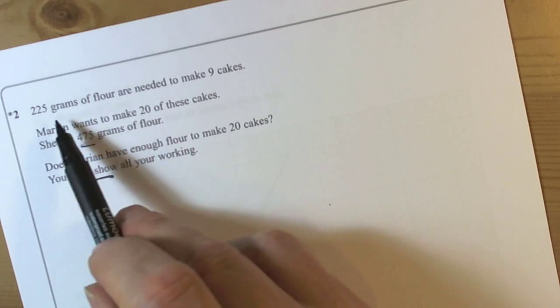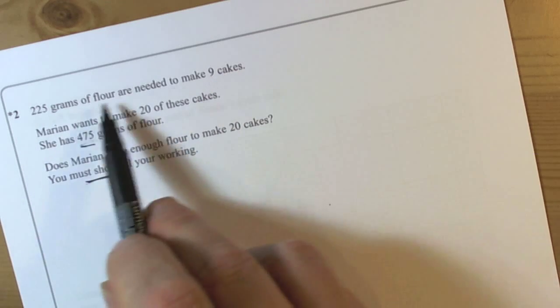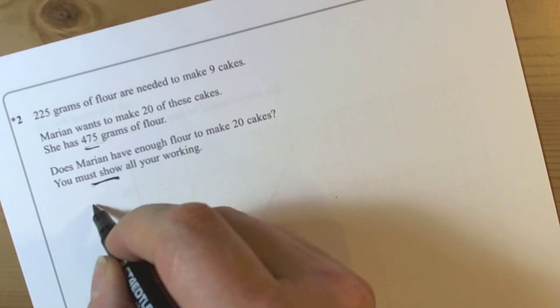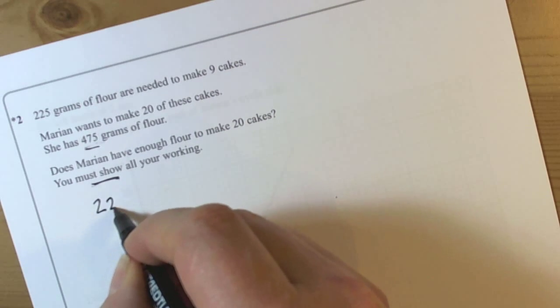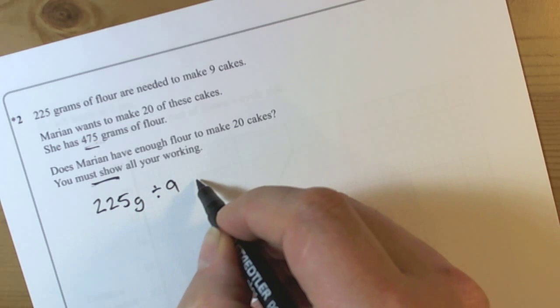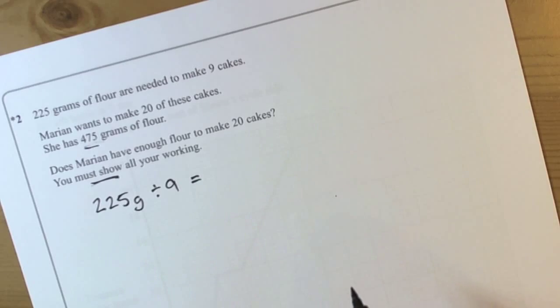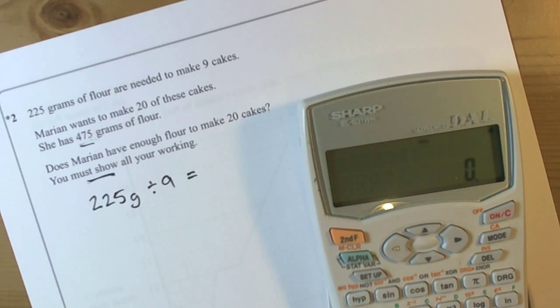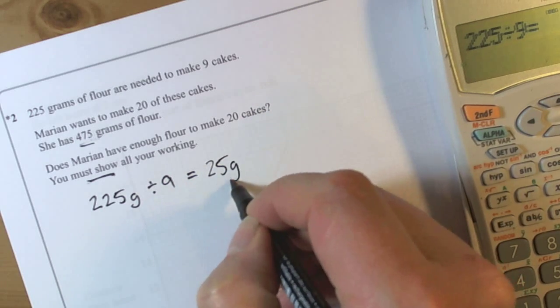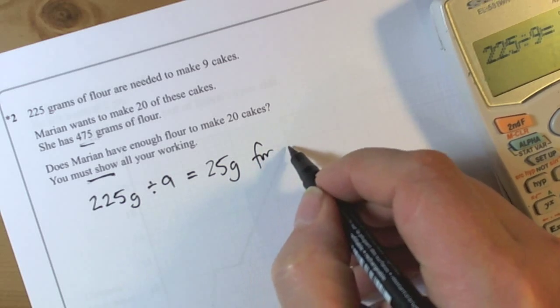So the first thing to do here is the classic: let's find out how many grams are needed for one cake. It's a calculator paper, so this wouldn't be too bad to do. I've got 225 grams divided by 9, and this will tell us how many grams of flour we need for one cake. So with our calculator, 225 divided by 9 equals 25 grams. So we need 25 grams for one cake.